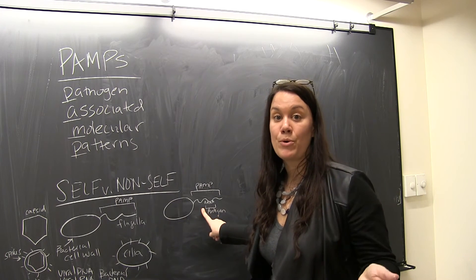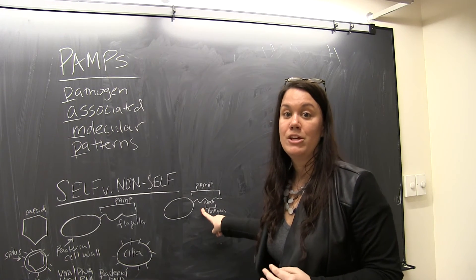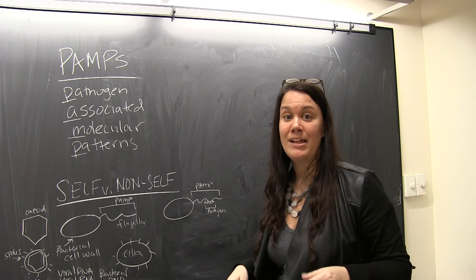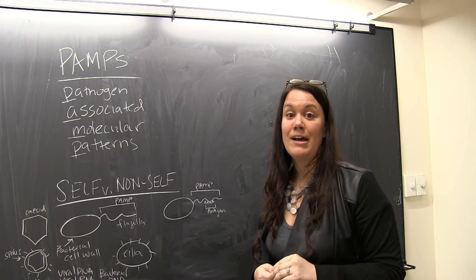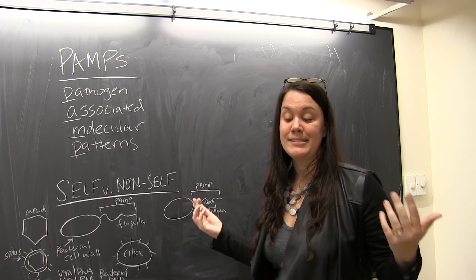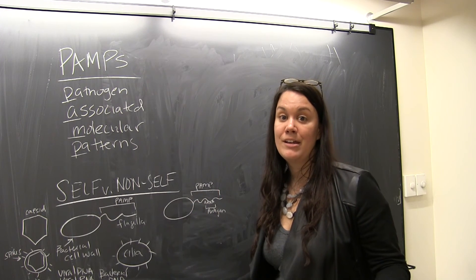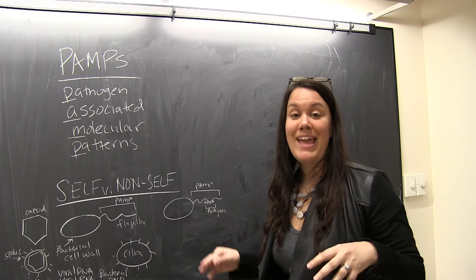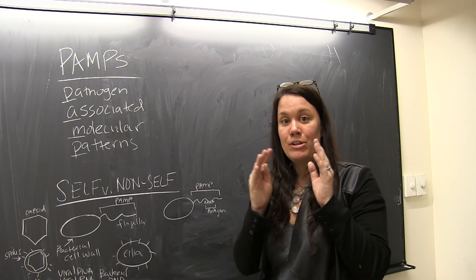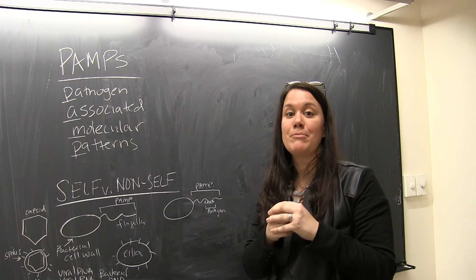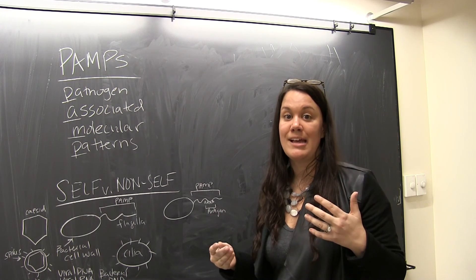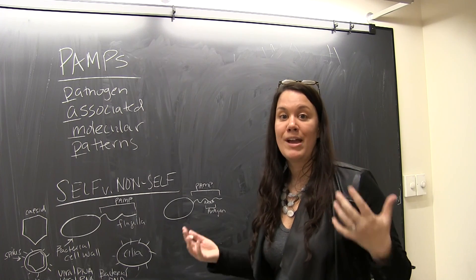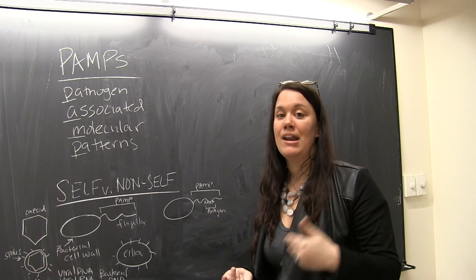So remember, the PAMP is the big structure like a flagella, cilia, a cell wall of the bacteria, or the viral RNA or DNA. The antigen is the actual short sequence of amino acids or nucleotides that an antibody can specifically bind to and recognizes as foreign and harmful.